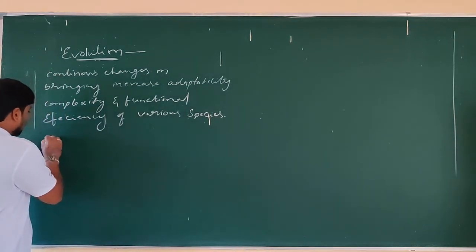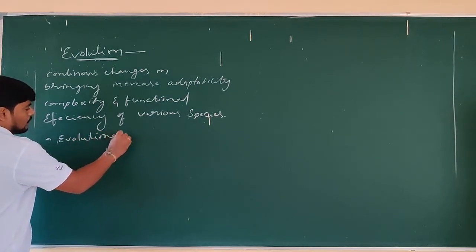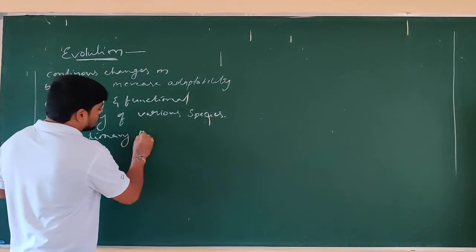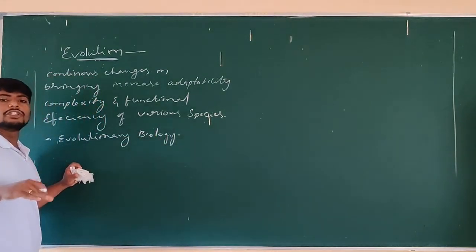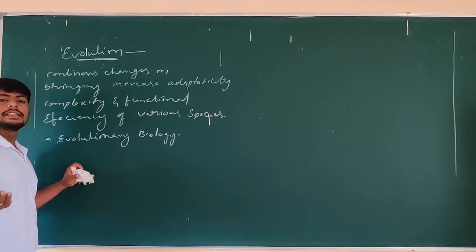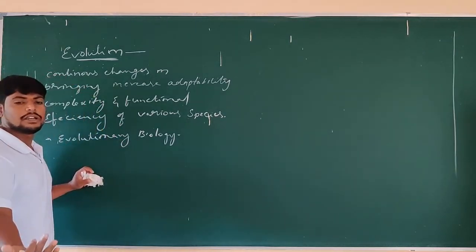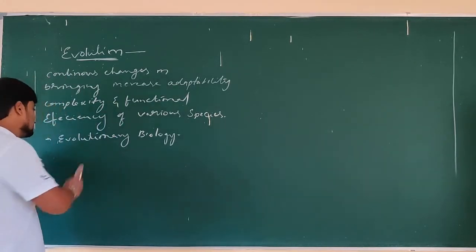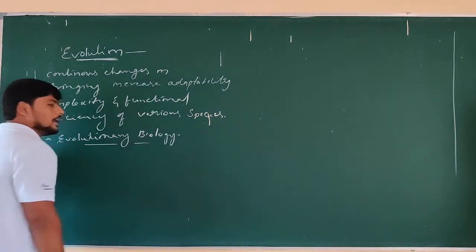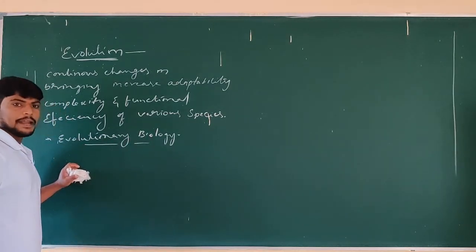Evolution biology is the branch of science that helps in the study of evolutionary changes — specifically the origin of life from pre-existing forms. This is a separate branch of science called evolutionary biology.